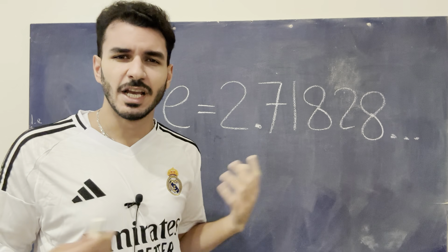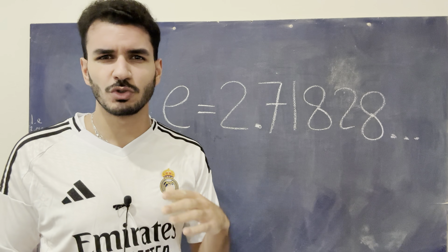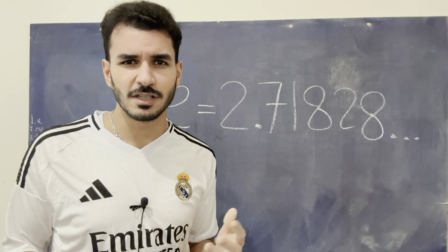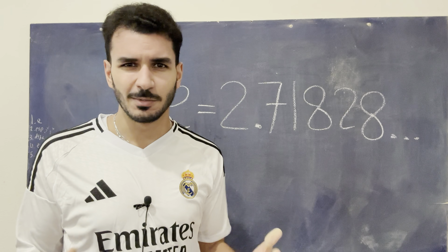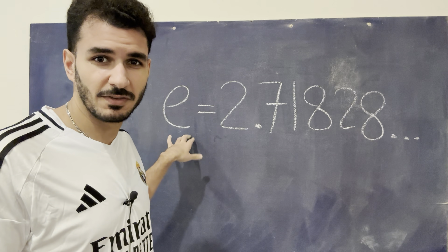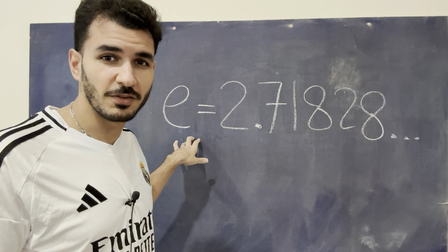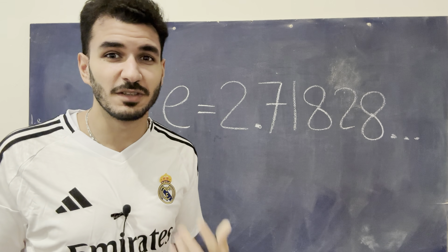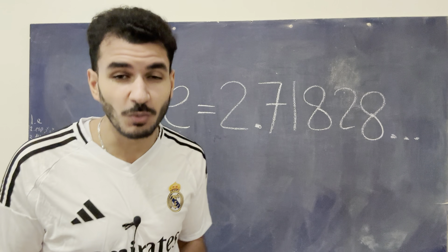Where does this number come from, and why does it keep coming up in exponential growth? Why does it come up in electrical engineering concepts like Fourier transforms and complex analysis? It's a very common number in mathematics, physics, and engineering, but unfortunately most of the time it is not taught — or explained — very well.